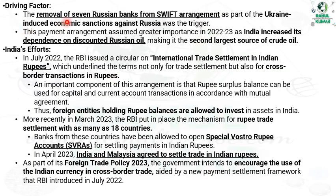The removal of seven Russian banks from SWIFT agreements as part of Ukraine-induced economic sanctions against Russia was the trigger. The payment agreement assumed greater importance in 2022-23 as India increased its dependence on discounted Russian oil, making Russia the second-largest source of crude oil for India.